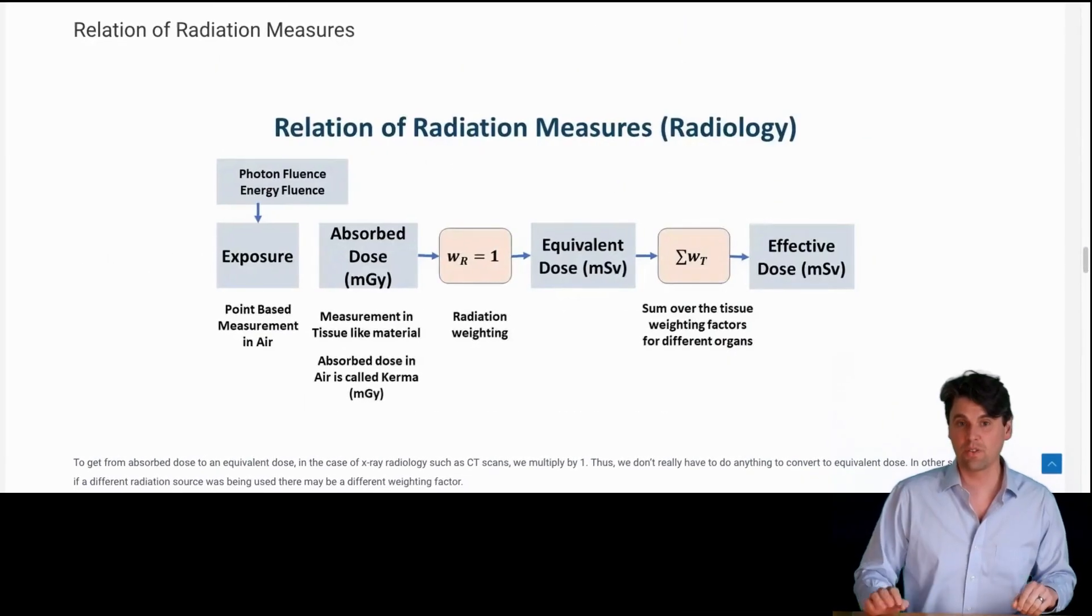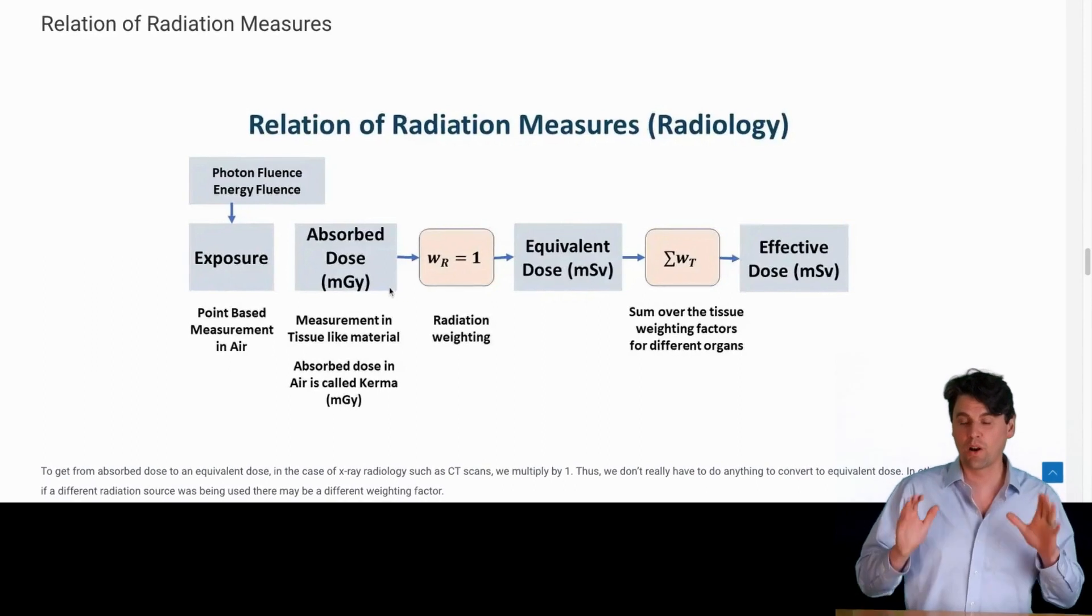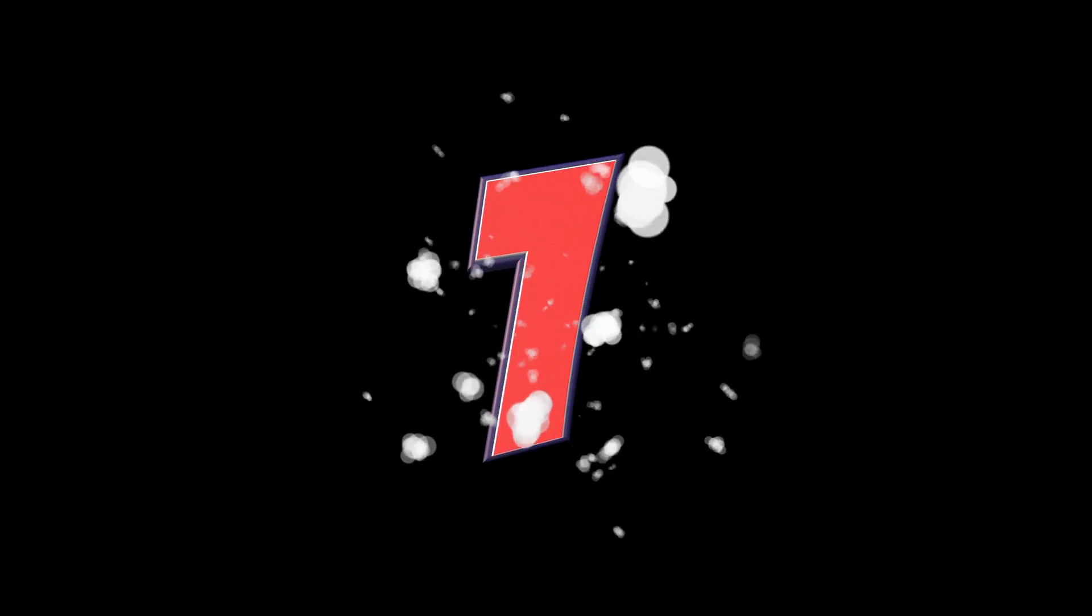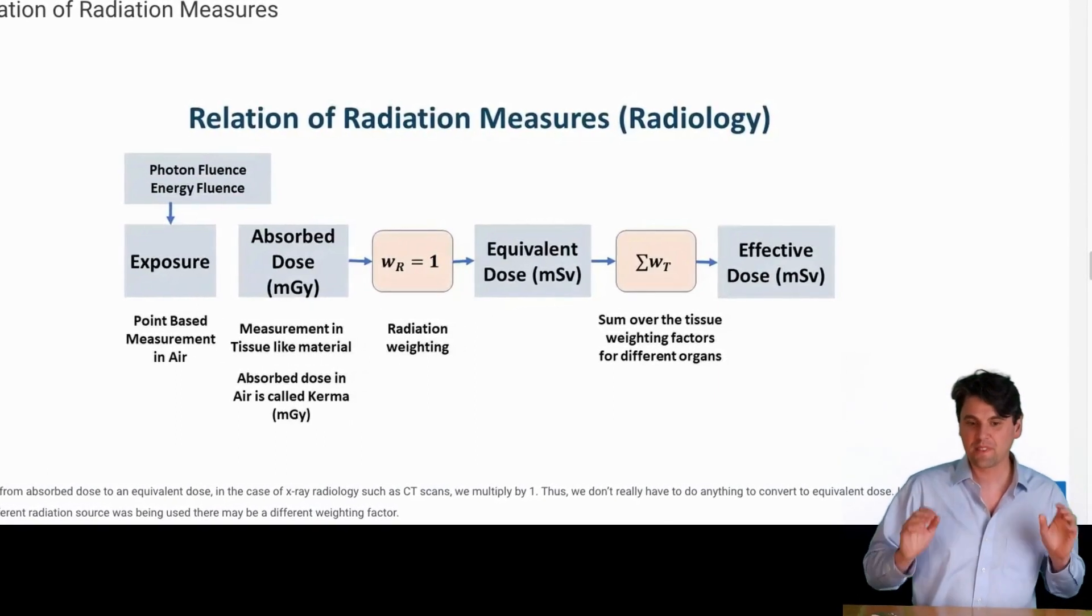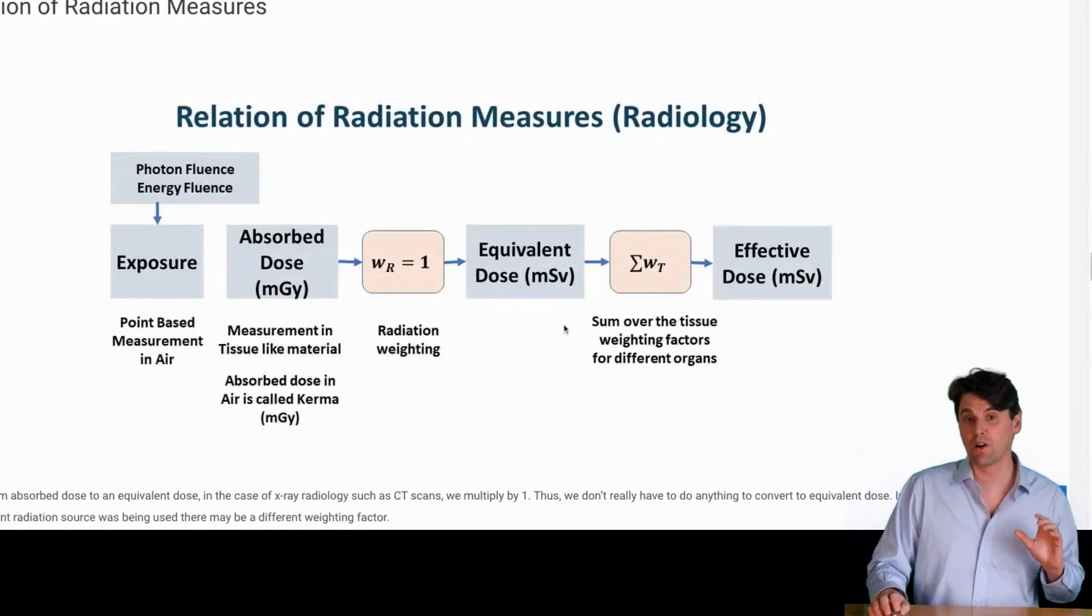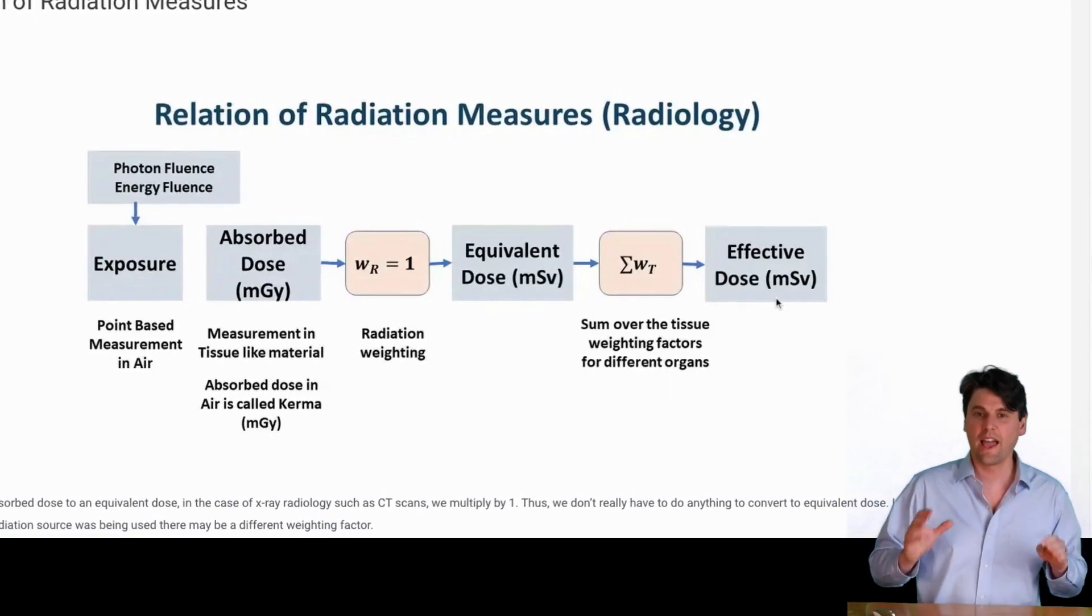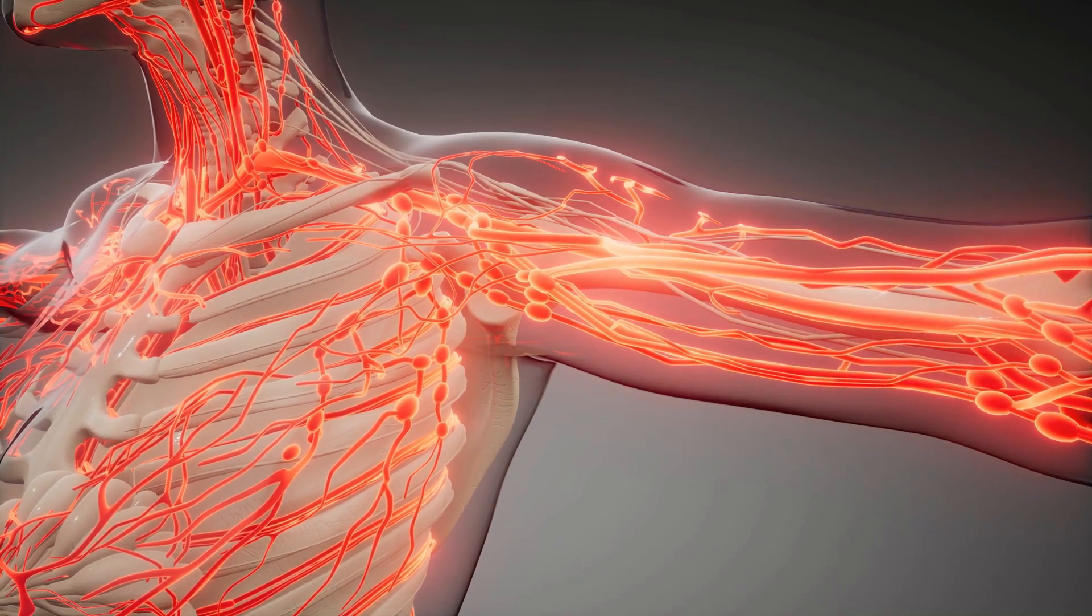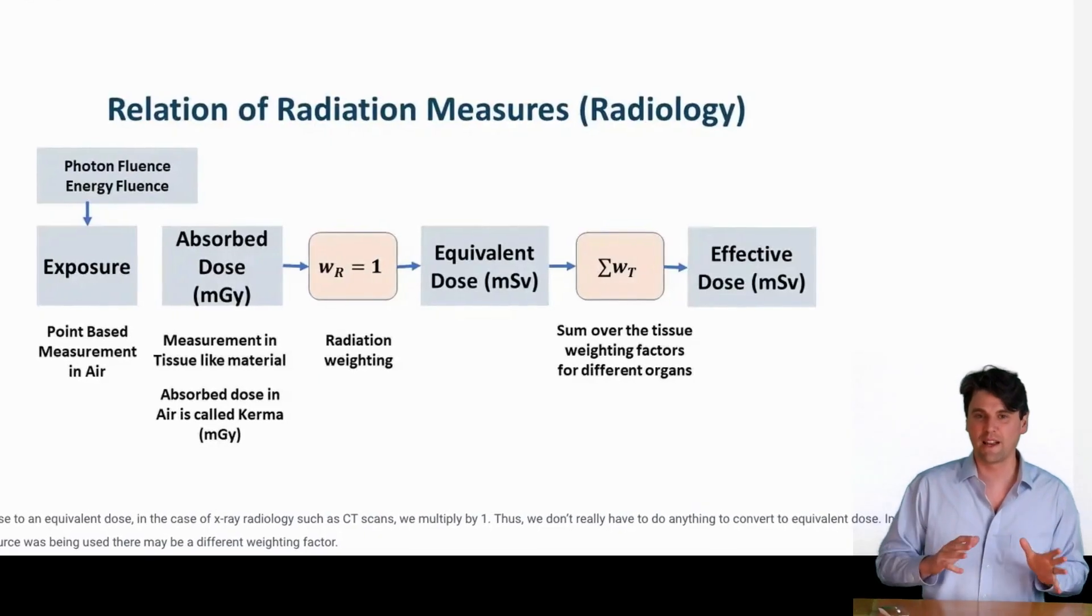As we mentioned in our earlier videos on dose, for CT we're typically starting with absorbed dose. Then we're going from absorbed dose to equivalent dose. To go from absorbed dose to equivalent dose, all we have to do is multiply by one. That's pretty easy because we're using x-rays and they have a weighting factor of one. Then to go from equivalent dose to effective dose, we have to add up all the different tissue types. The impact of those different tissue types depends on the radiation weighting factor, because different tissue types are more or less sensitive to radiation damage.